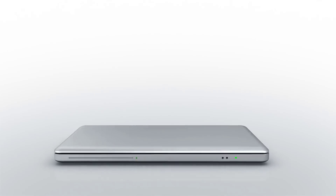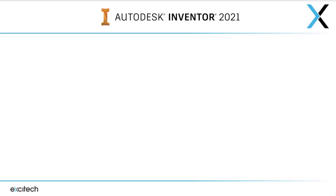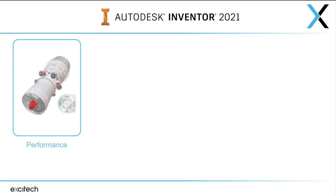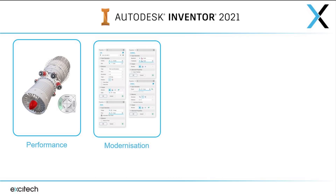This year Autodesk have looked at improving the software in four key areas. Firstly, performance. As with every release, they aim to make Inventor more efficient for users, improving not only speed but overall capability. Modernisation — they have carried on updating toolbars to fit in with the fully dockable theme they are producing.